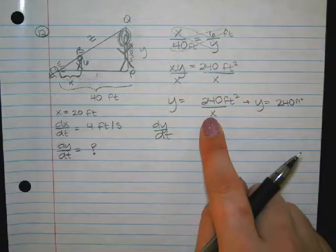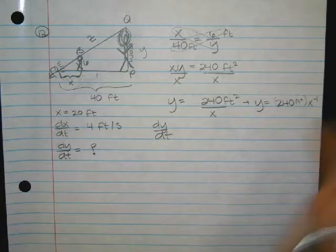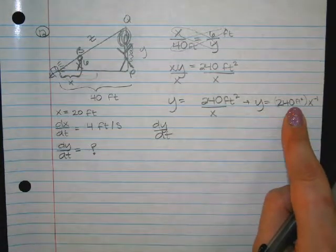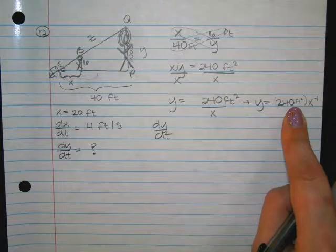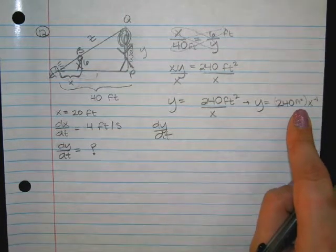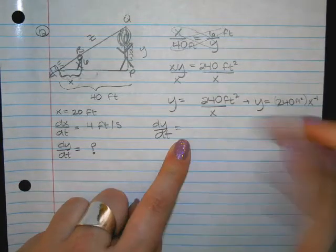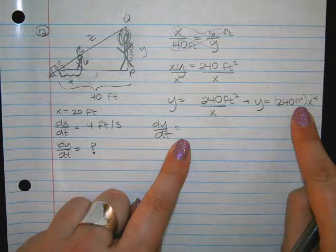So I'm going to rewrite this as 240, I'm remembering feet squared, and then what do I do with this X on the bottom? Okay, X to the negative one. I'm going to go and write this in parentheses just to say that 240 is actually the coefficient. I'm just keeping my units with it so I don't forget my units. Okay, all right, so we said the derivative of Y was dy/dt.